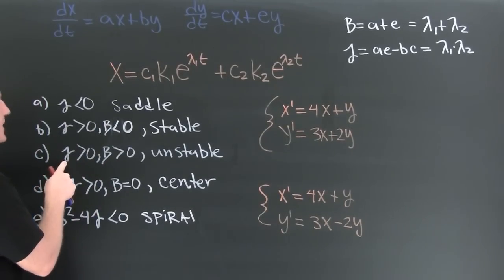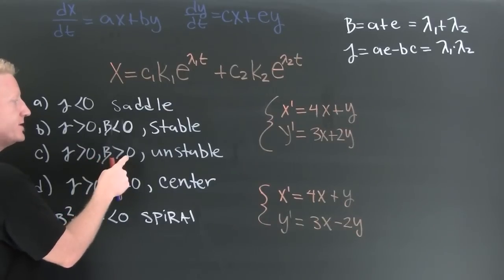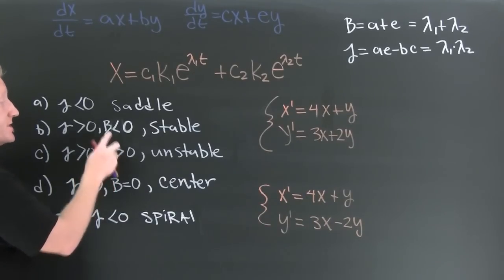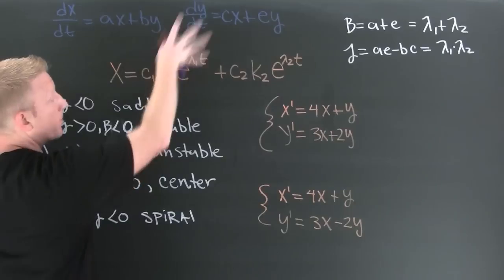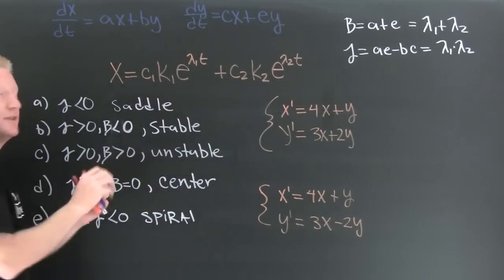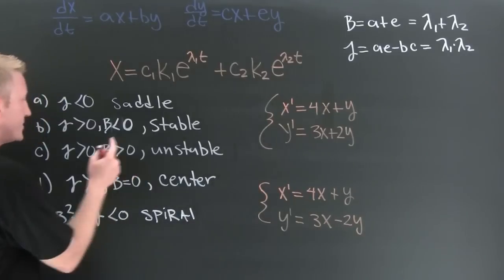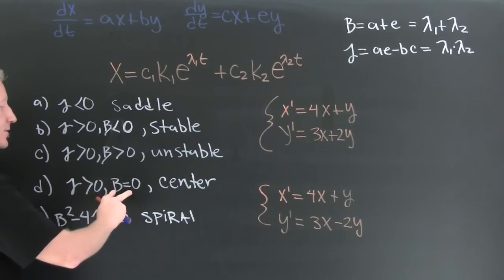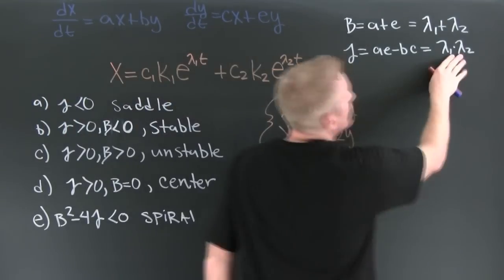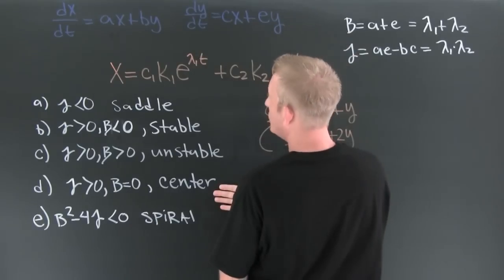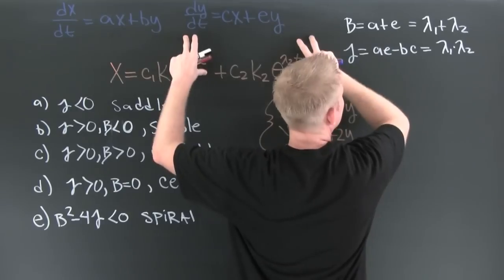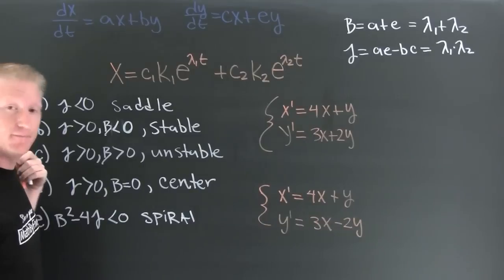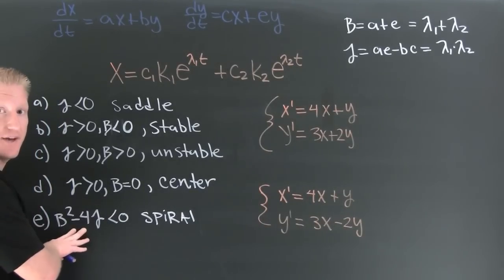If my gamma is bigger than zero and my beta is bigger than zero, that means they have the same sign and both eigenvalues are positive, so everything is going to blow up — it's a source. Now, if they have the same sign and the trace is zero, that means the real parts cancel and you get a center. And if b squared minus four gamma is smaller than zero, you're getting complex eigenvalue values at that point, meaning it's a spiral.